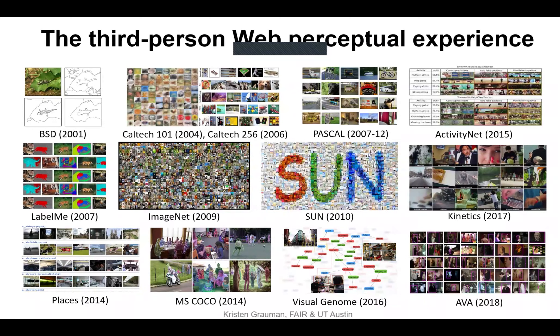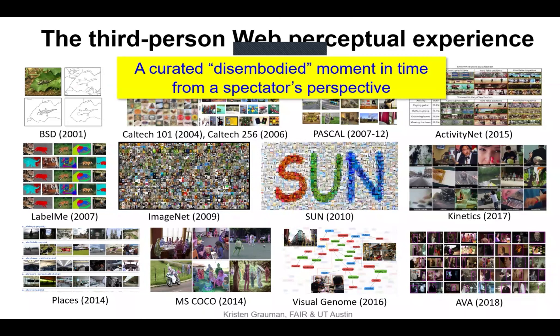In visual recognition and other related problems, this is generally third-person data, meaning taken from an observer's perspective — what you would call disembodied. It's out of the context of any physical, ongoing event. It's kind of a snapshot at a good moment in time and a good place in space to show what the person wanted to capture.